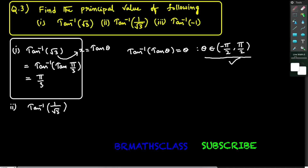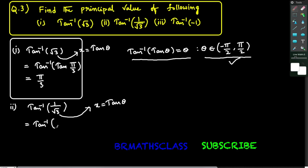Now let's find the principal value of tan inverse of 1 by root 3. I will use the same formula: tan inverse of tan θ equals θ, which holds when θ belongs to (−π/2, π/2). I want to write 1/√3 in the form of tan θ. From the trigonometry table, tan(π/6), that is tan 30 degrees, equals 1/√3.